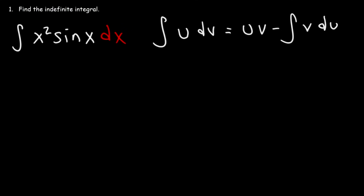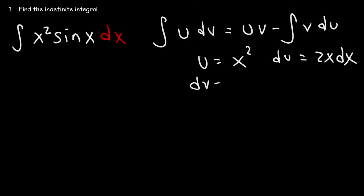We need to choose what u and dv are. Let's make u equal to x squared, so du is 2x dx. And dv equals sine x dx. The antiderivative of dv is v. The derivative of cosine is negative sine, and the derivative of negative cosine is positive sine, so v equals negative cosine x.